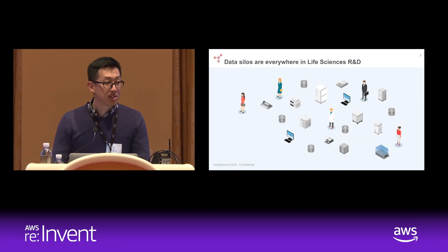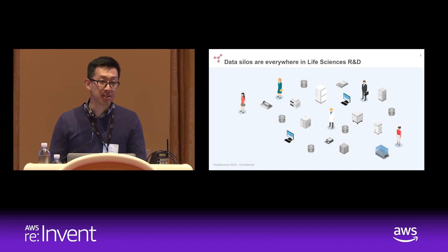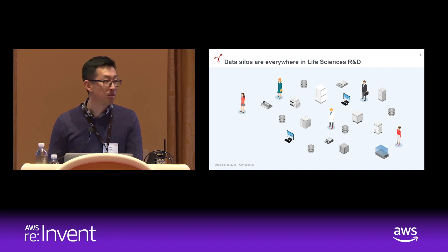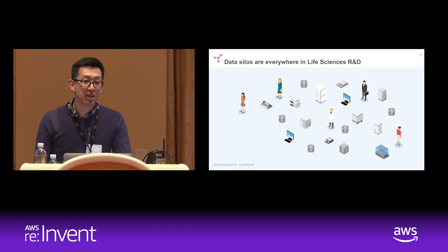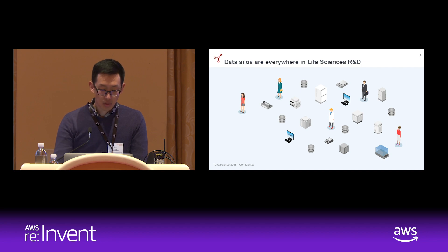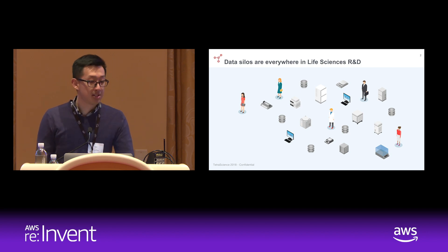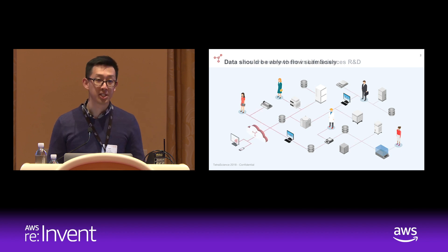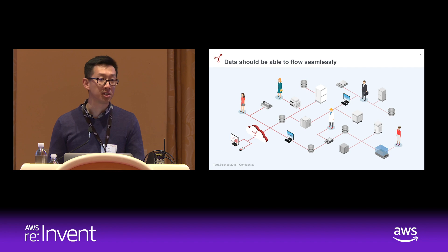A major challenge that all of us are facing is that a lot of the data are produced in silos. They share different formats, they're produced by different vendors, and the different softwares don't have standard APIs for them to communicate with each other. What we want to provide is a seamless data flow such that the different silos can be merged together, the data can flow from the data producers to the data consumers, and go to the right places.